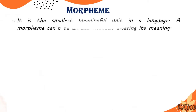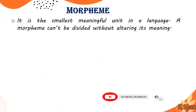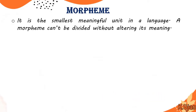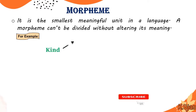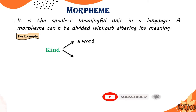Here I'm going to explain what is a morpheme. It is the smallest meaningful unit in a language. A morpheme cannot be divided without altering its meaning. In simpler words, a morpheme is the smallest meaningful unit of language. For example, 'kind' — 'kind' is actually a word as well as it is a morpheme.